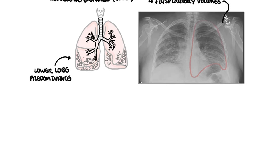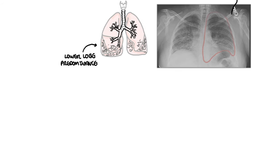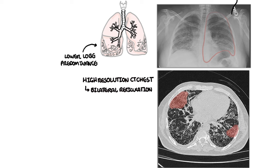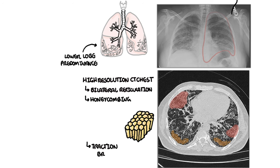A high-resolution CT chest is the gold standard, and there is a pathological pattern called usual interstitial pneumonia (UIP). The UIP pattern includes bilateral reticulation and honeycombing that is predominantly peripheral and in the lower lobes, with or without traction bronchiectasis. When the combination of clinical and imaging findings is not diagnostic, rarely a lung biopsy can be considered, with biopsies taken from multiple lung lobes.